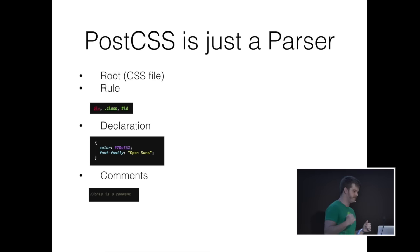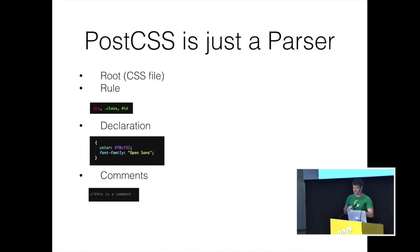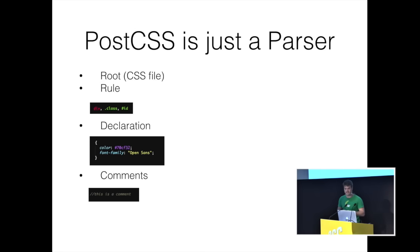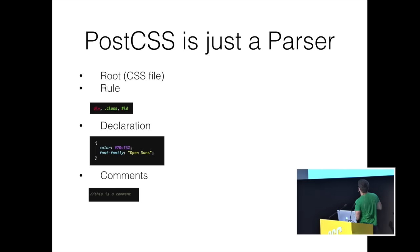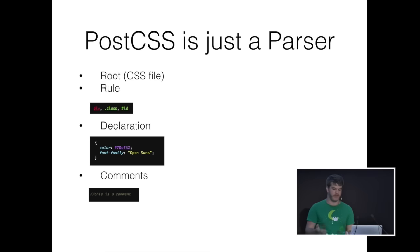The nodes go like this: there's a root node — that's your entire CSS file. There are rules: divs, classes, IDs. There are declarations like colour. This colour is really important — it is gecko green, like the T-shirts. And a nice font. And there are comments. You can track all of those things using PostCSS and then perform operations on them.